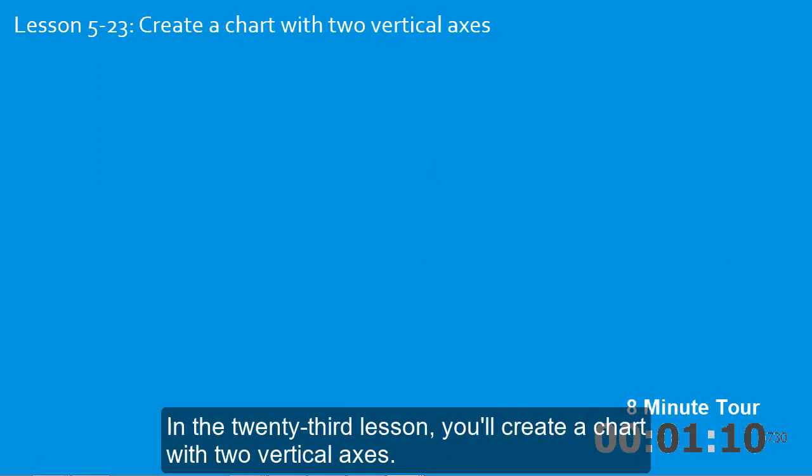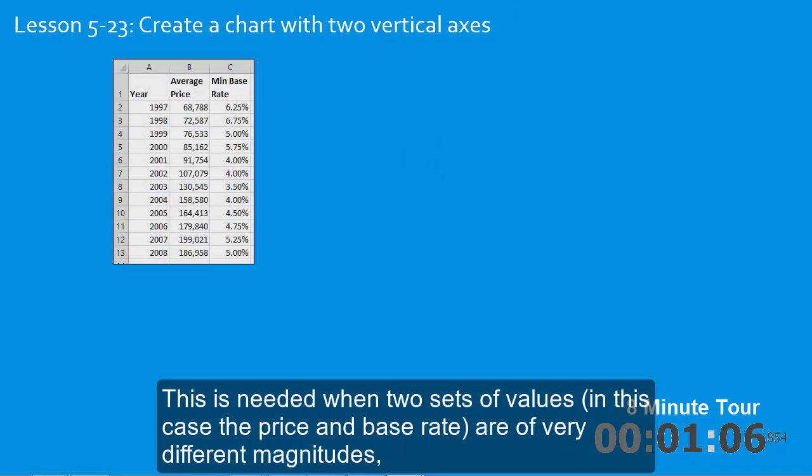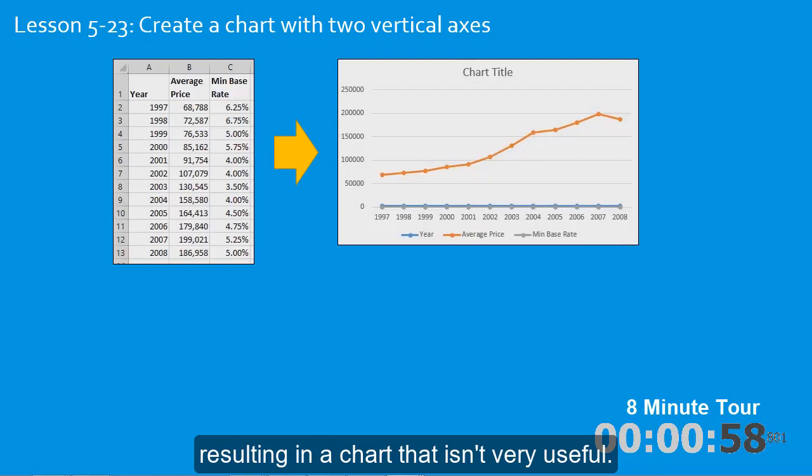In the twenty-third lesson you'll create a chart with two vertical axis. This is needed when two sets of values, in this case the price and base rate, are of very different magnitudes, resulting in a chart that isn't very useful. By adding a second y-axis you can create this chart that accurately represents the data.